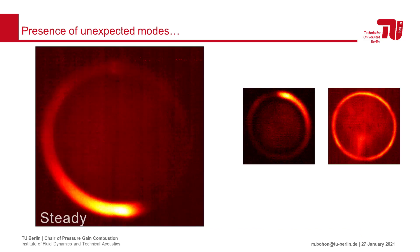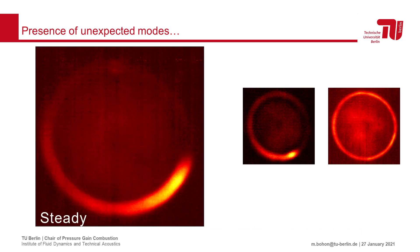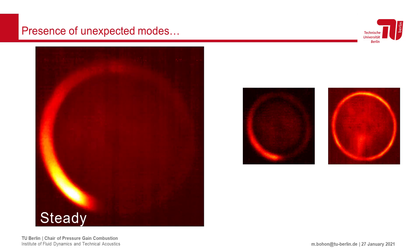When we switch to a high-speed camera imaging the flame luminosity, we can see a steadily propagating wave, fitting the classical idea of the RDC.